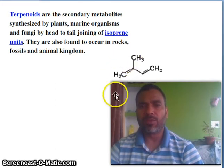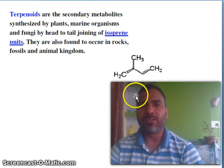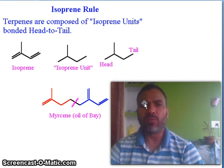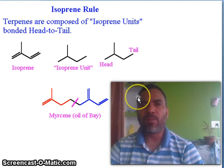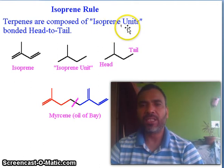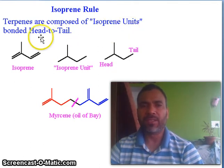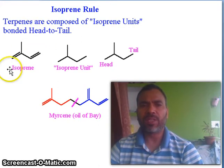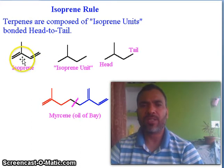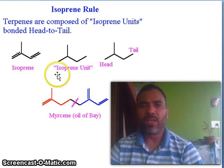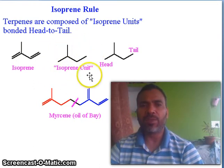So what is the isoprene rule? Terpenes are composed of isoprene units, bonded head to tail. You see this is isoprene — the structure of isoprene. And if you remove this double bond and look at it in this form, this is the isoprene unit.